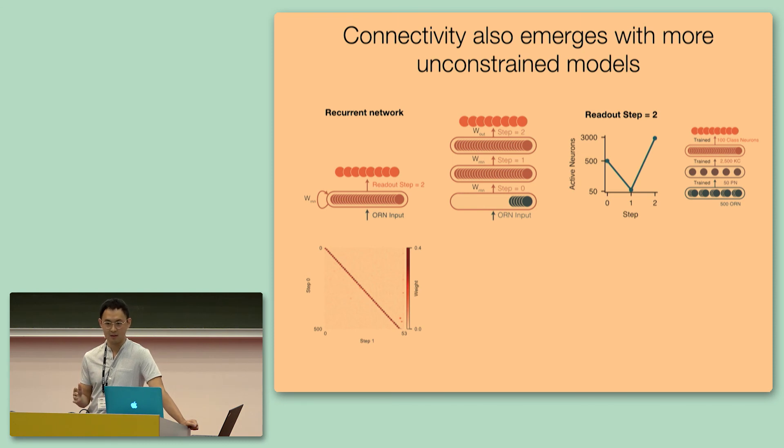We also observe that at step two, these 50 neurons then undergo expansion to innervate all 3,000 of the neurons. So the network learns to use all 3,000 neurons to read out activity for learning at the readout step. And moreover, the connectivity between step one and step two also corresponds to sparse random connectivity that we have previously observed.